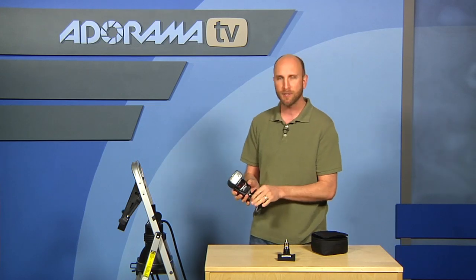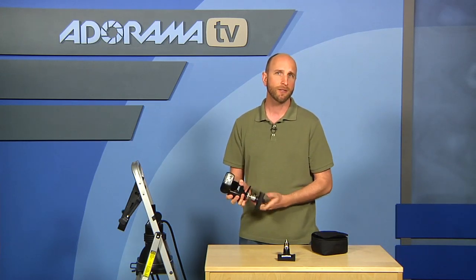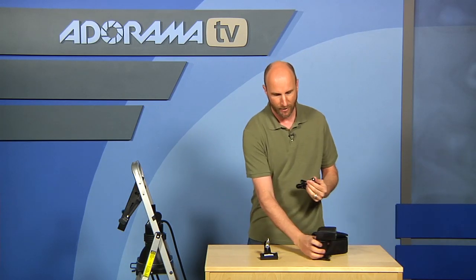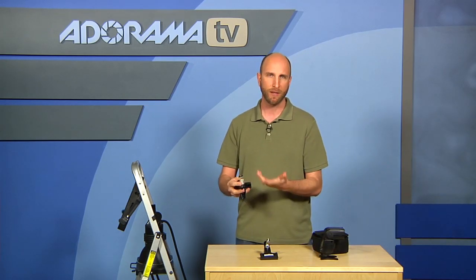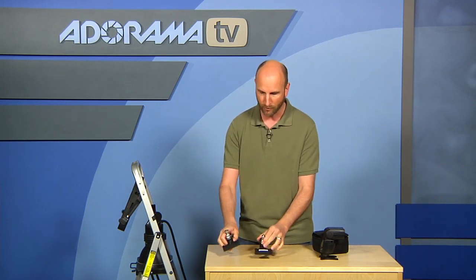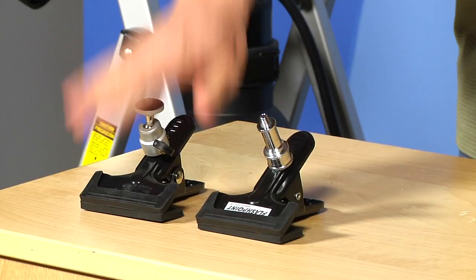They're Flashpoint clamps. And again, they're $10. So there's two different flavors. There's the normal one with the stud. And then there's this guy here. And this has the small ball and socket head that allows you to do some more articulation with whatever you're using. And again, $10 each.